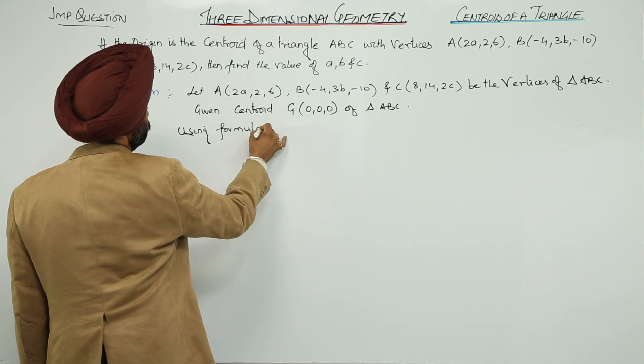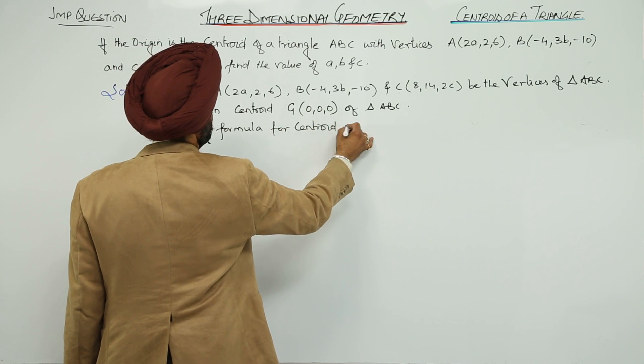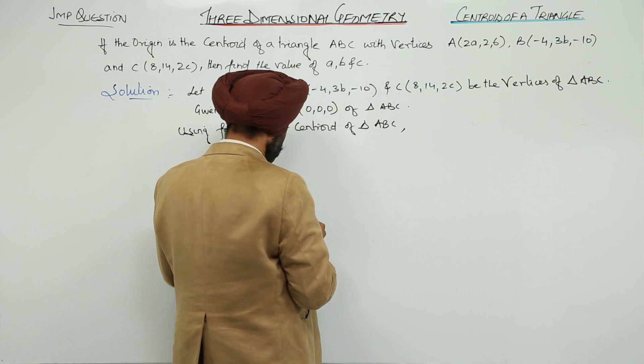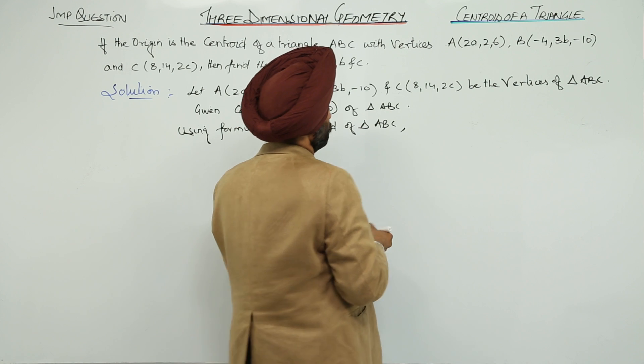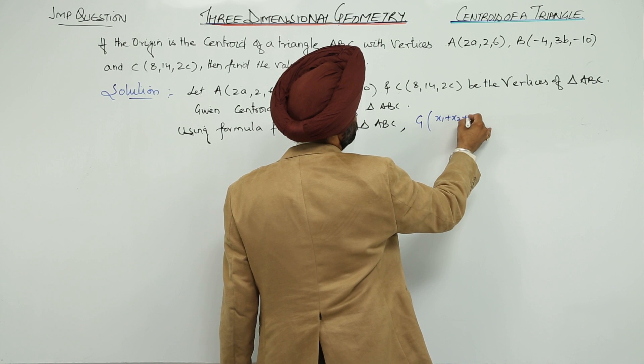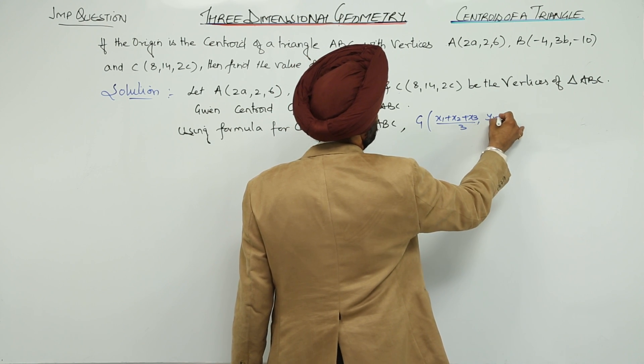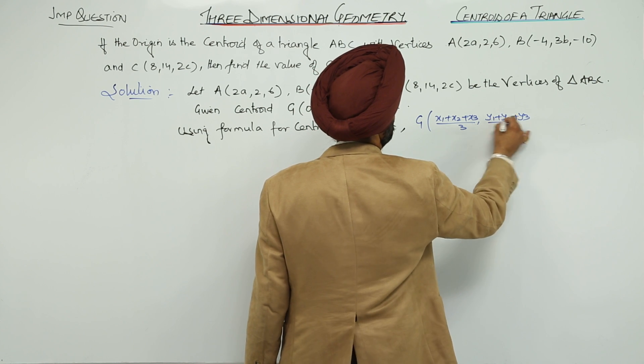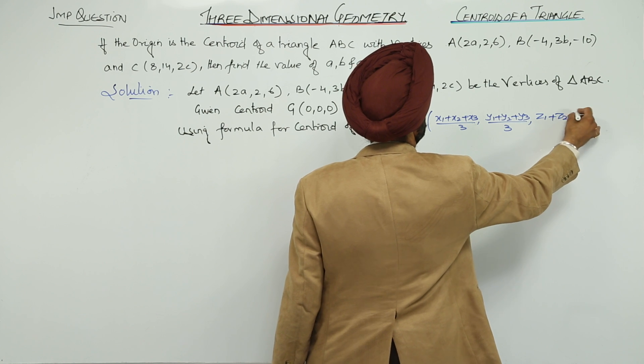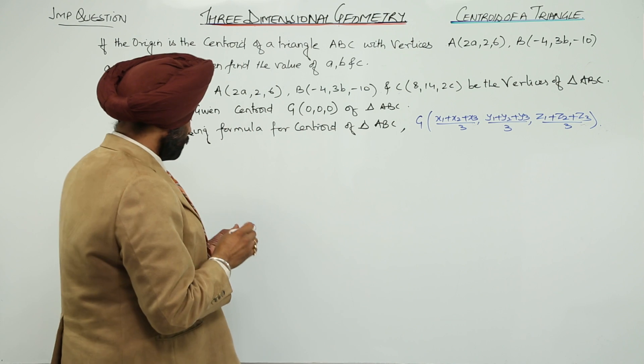Using formula for centroid of triangle ABC, the coordinates of G are: (x1+x2+x3)/3, (y1+y2+y3)/3, (z1+z2+z3)/3.